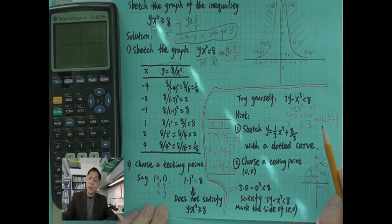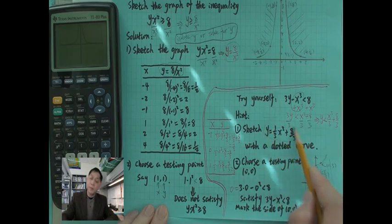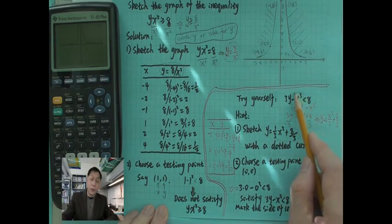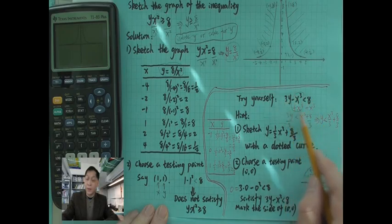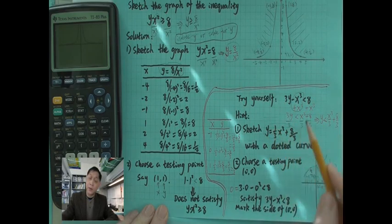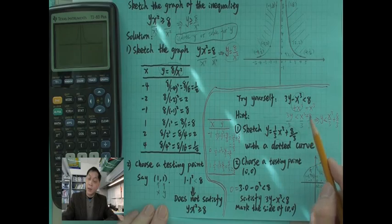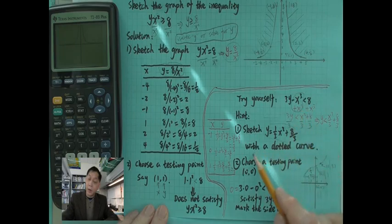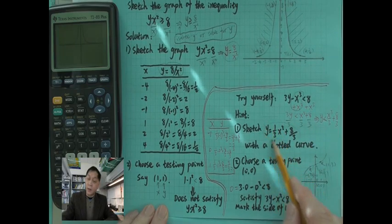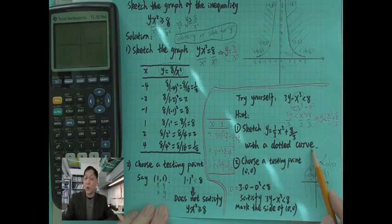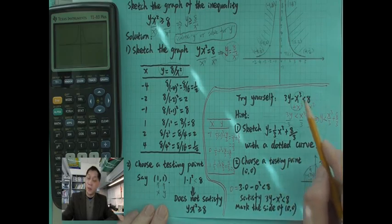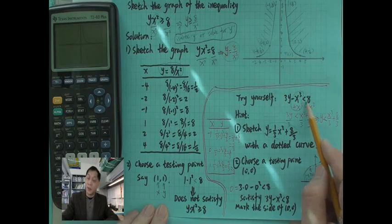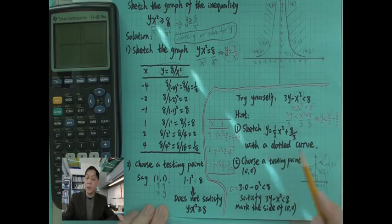So basically what we do, we can sketch this one. This one we could not recognize, but we can recognize this one. Since this is a sign without equal, we have to find out the graph by using a dotted curve. Solid curve means the curve is included, but here there is no equal sign, so we want to use a dotted curve.